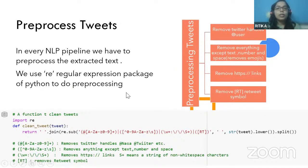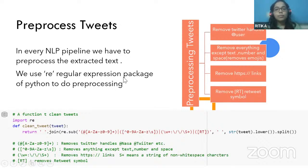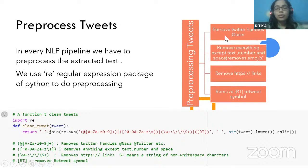In every NLP pipeline, an important task is pre-processing the unstructured text data we receive. Our input text here is the tweets. In pre-processing, we focus on four broad things: removing Twitter handles (the @user mentions), removing everything except text, numbers and spaces, removing emojis, and removing HTTPS links and retweet symbols present in the tweets. We achieve this using Python's regular expression package.